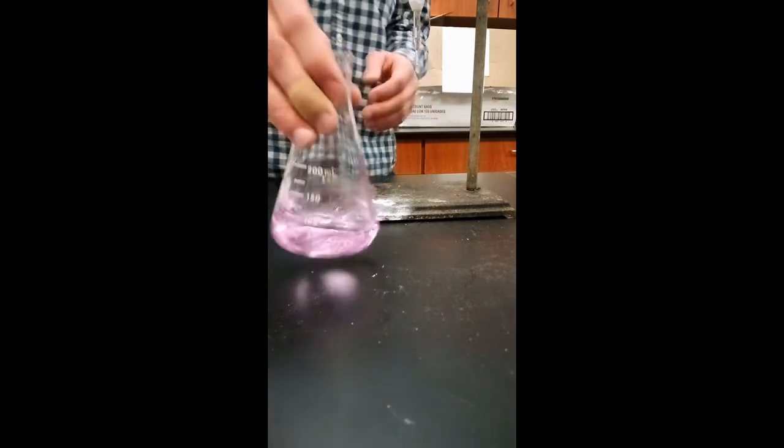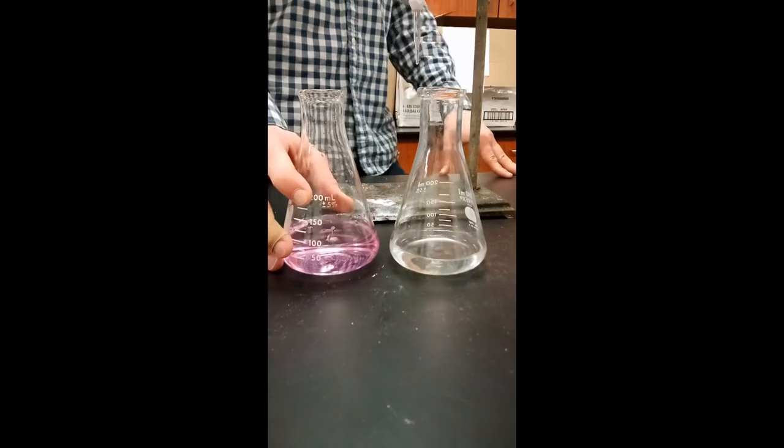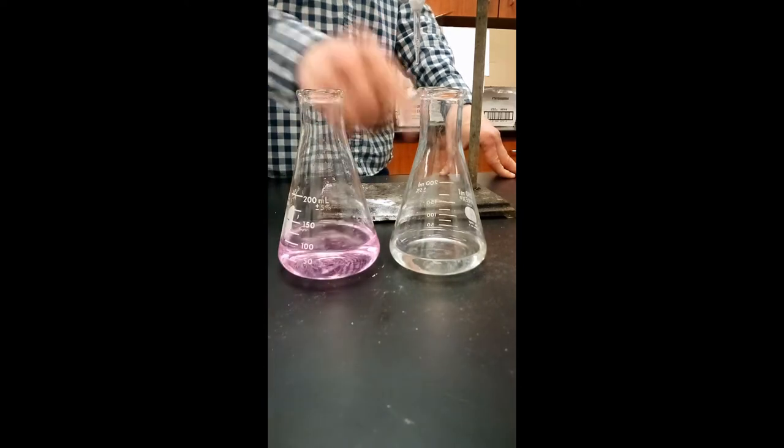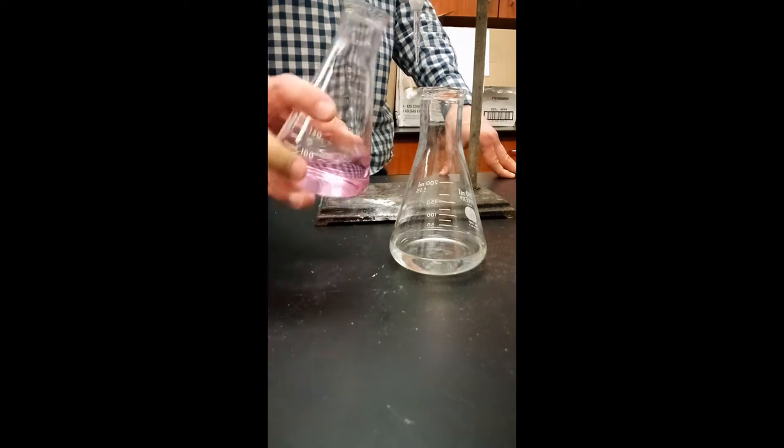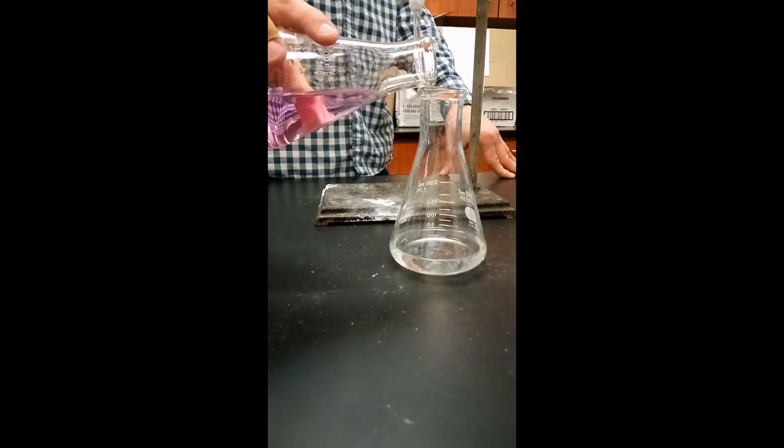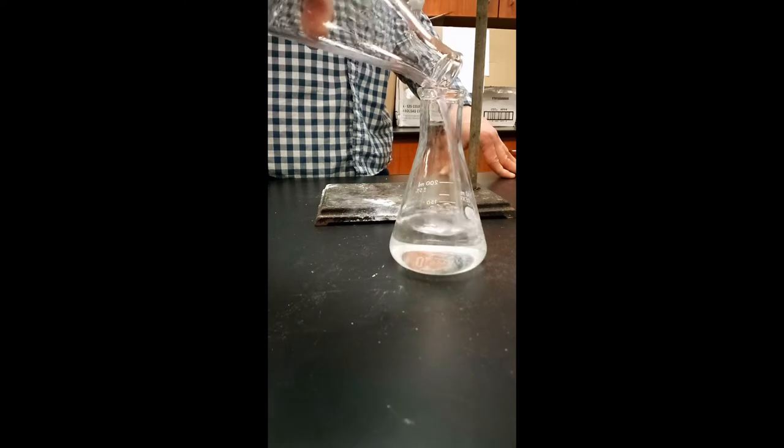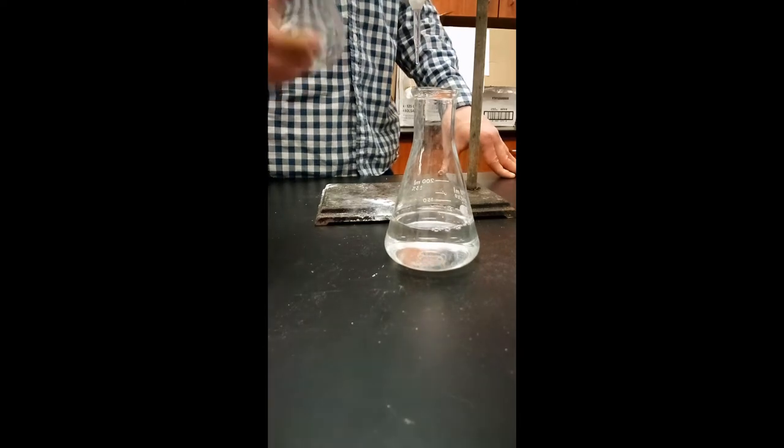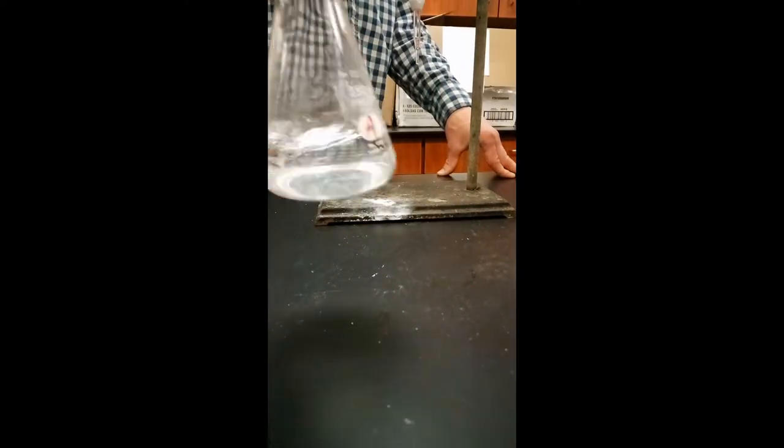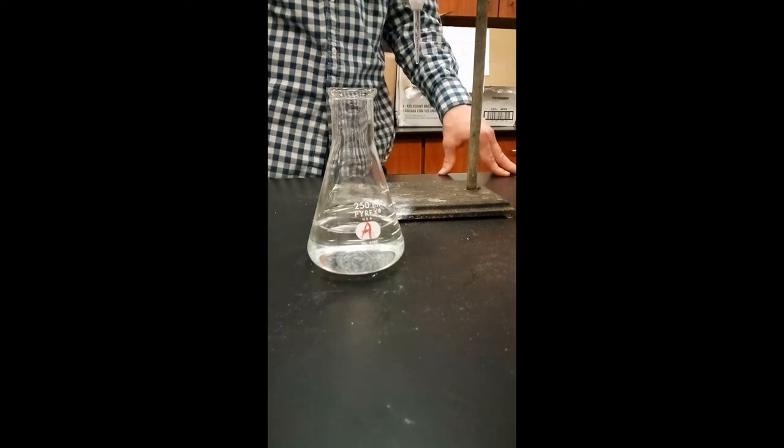So then we'll take this solution which we just neutralized with the base, KHP being the acid in this reaction with the base sodium hydroxide, and we'll add it to the other 50 milliliters of the KHP that we had separated earlier, forming our buffered solution. You'll notice since we added more acid, it's gone back to clear, but we know it's buffered because it has the appropriate amount of sodium hydroxide in it as well.